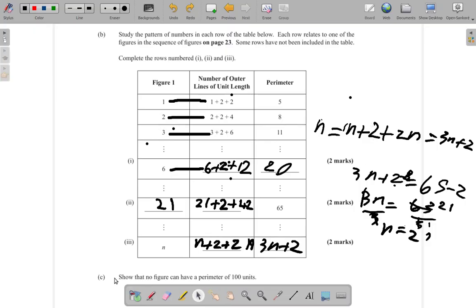All right, we have part C of the question here. It says show that no figure can have a perimeter of 100 units. All right, we're going to show that no figure can have a perimeter of 100 units.